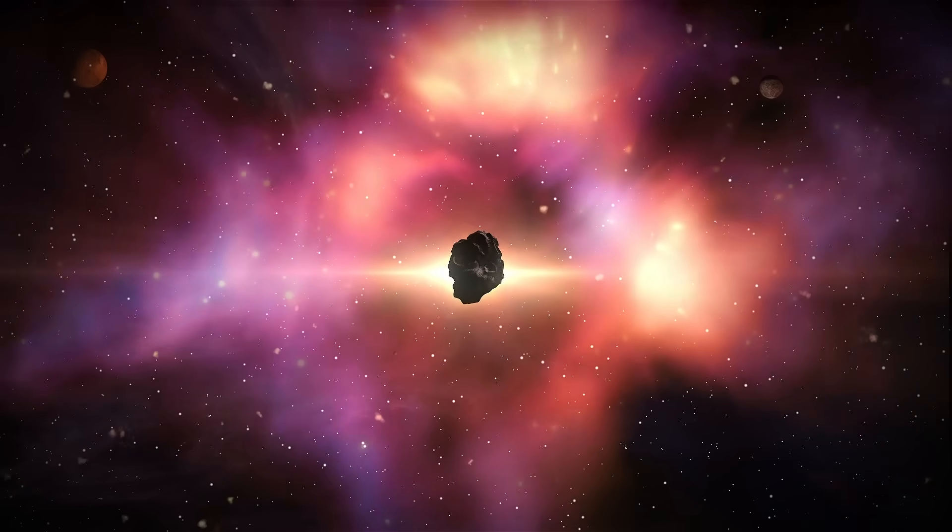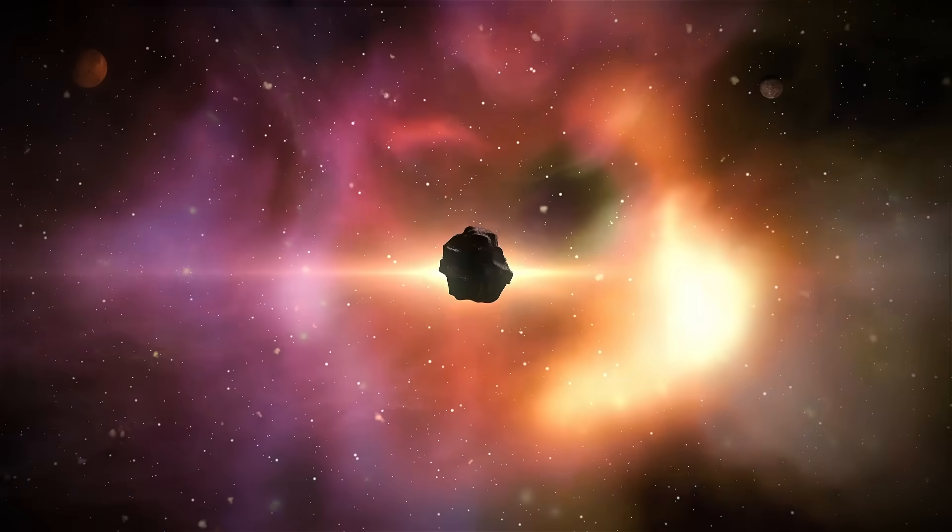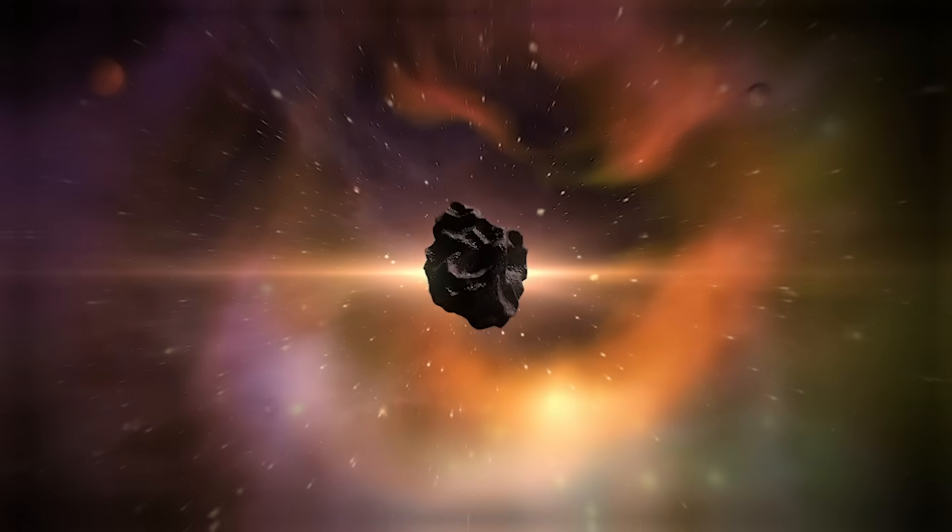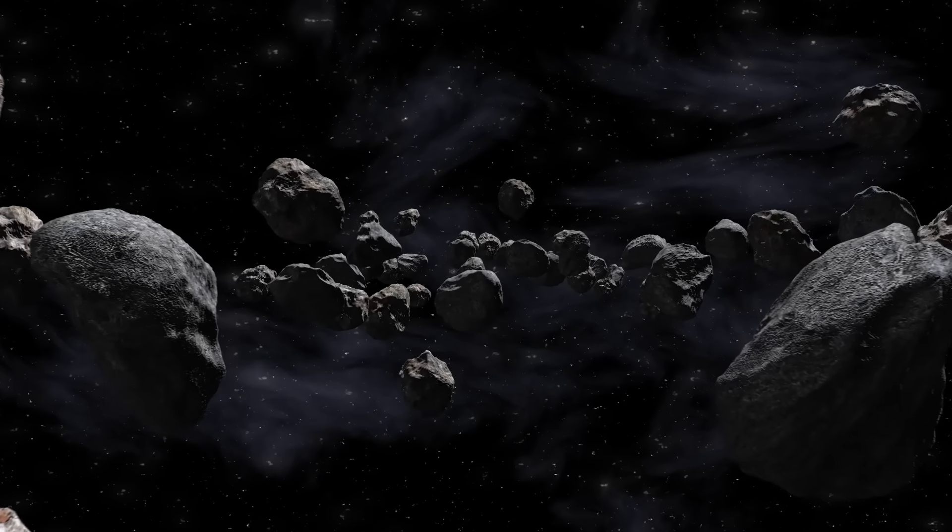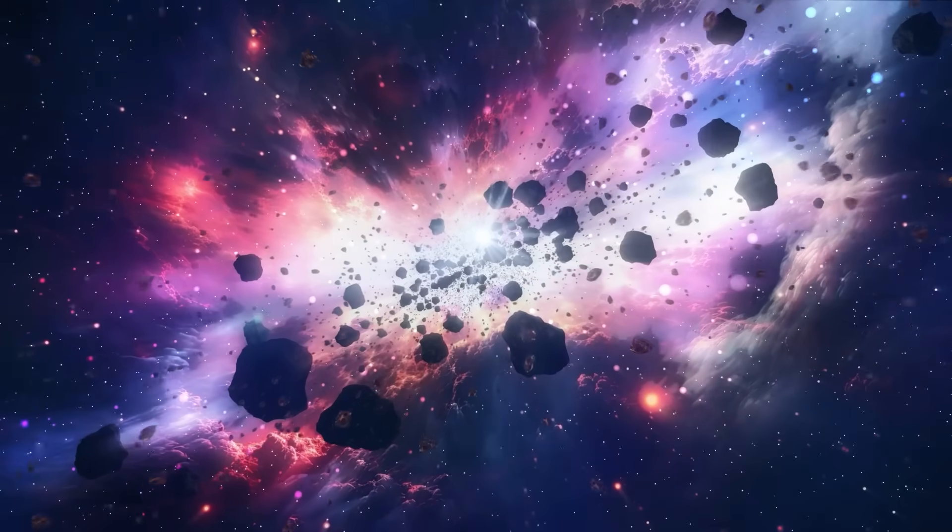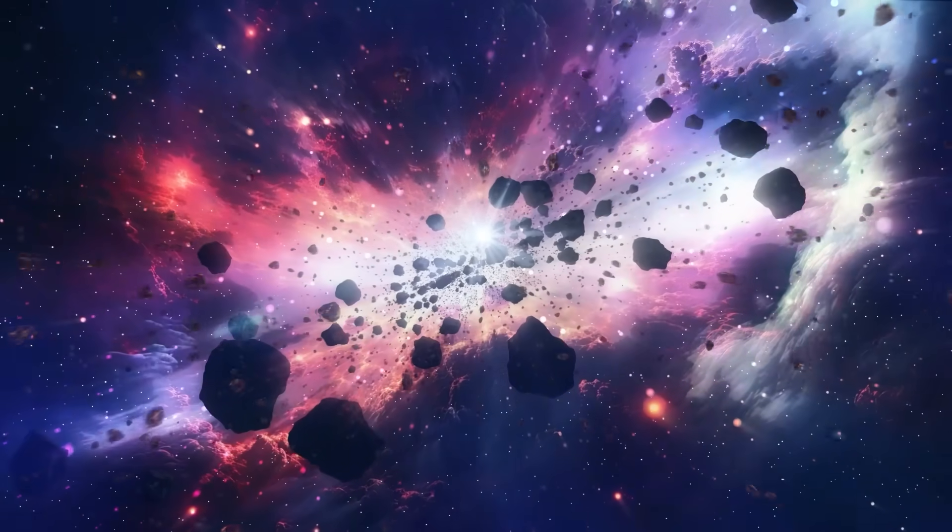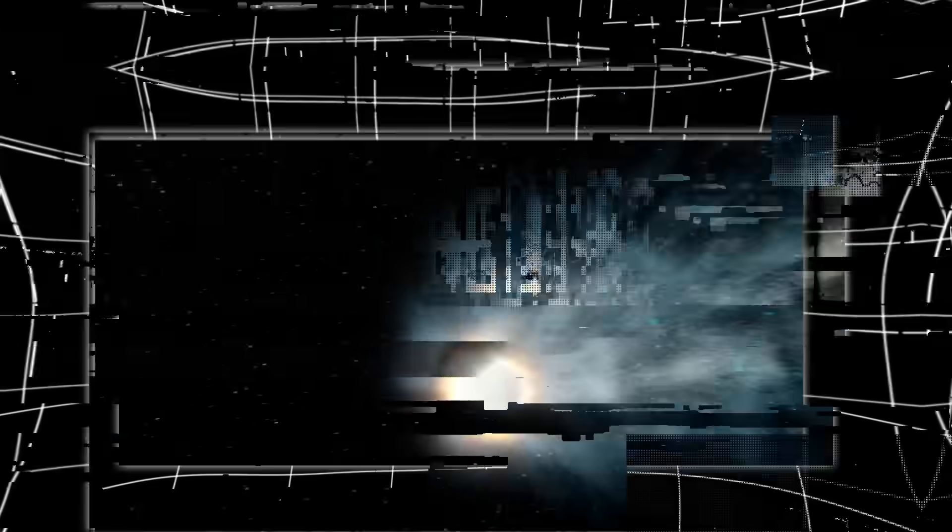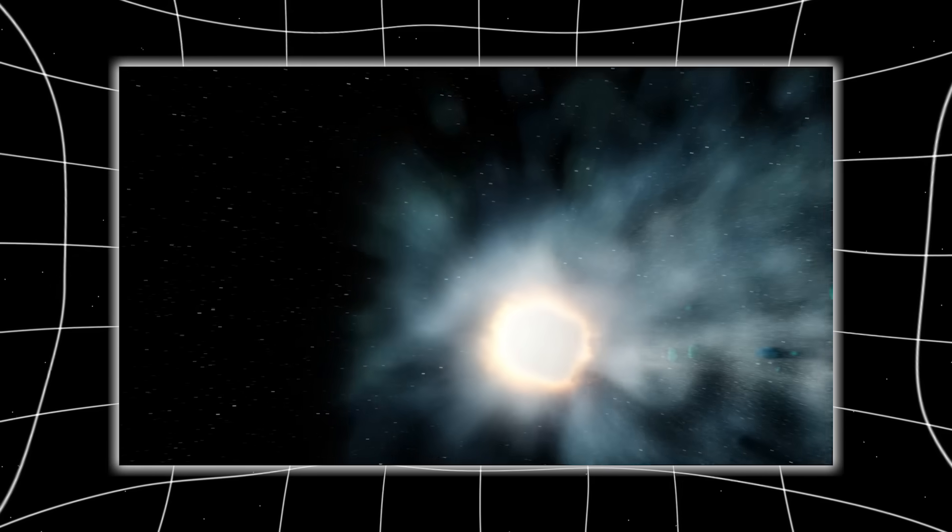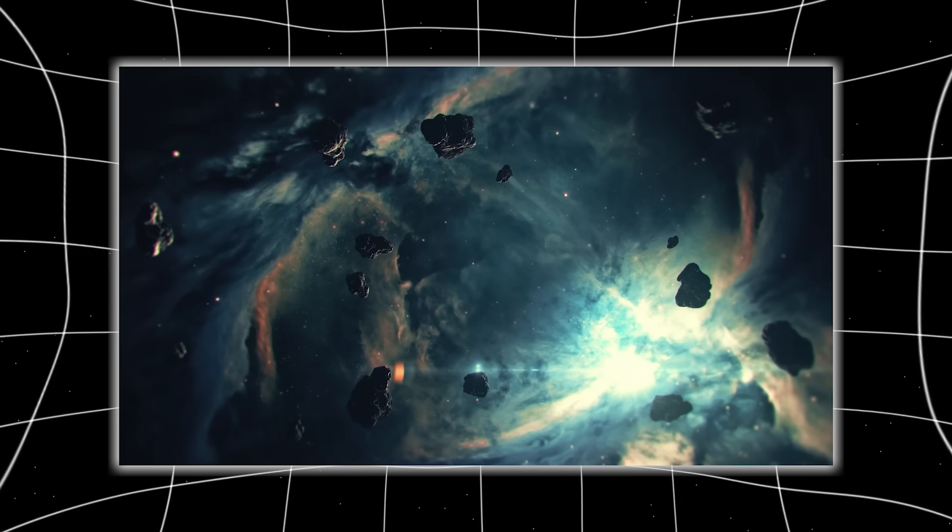For months, scientists had predicted that as Atlas swung around the sun, it would erupt in brilliance. Its icy crust would boil, its surface would fracture, its body would release torrents of gas as gravity and heat stripped it bare. That's what nature does. That's what the models demanded. But the universe had other plans.